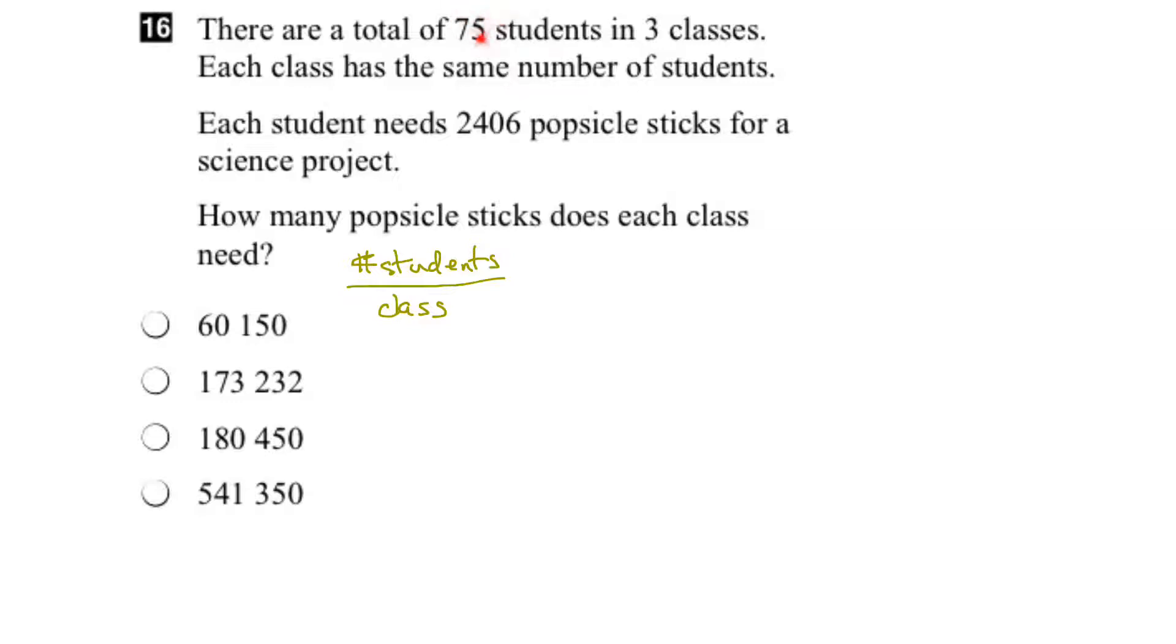So if there's 75 students in three classes, this means 75 on the top divided by 3 for the number of classes. The key here is that each class has the same number of students, so we can go ahead and make this division.